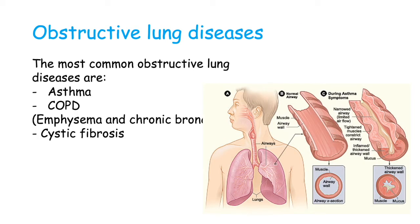Some of the most common obstructive lung diseases include asthma, which is a chronic inflammatory disorder of the bronchial mucosa that causes bronchial hyper-responsiveness and constriction of the airways. In this image we have a normal airway and then an airway during an asthma exacerbation — we can see how much obstruction there is, as well as the mucus and how much harder it is for air to flow through.